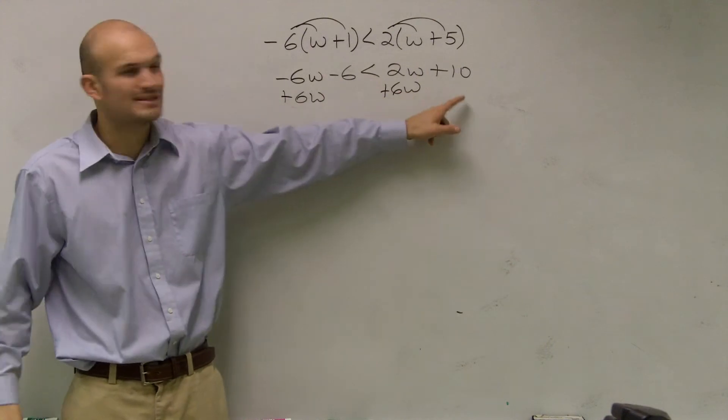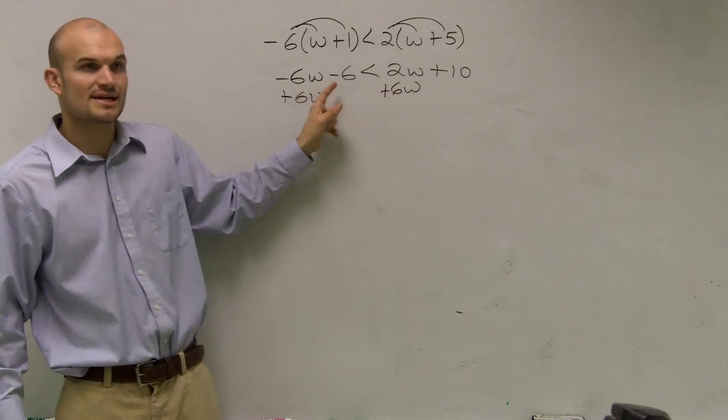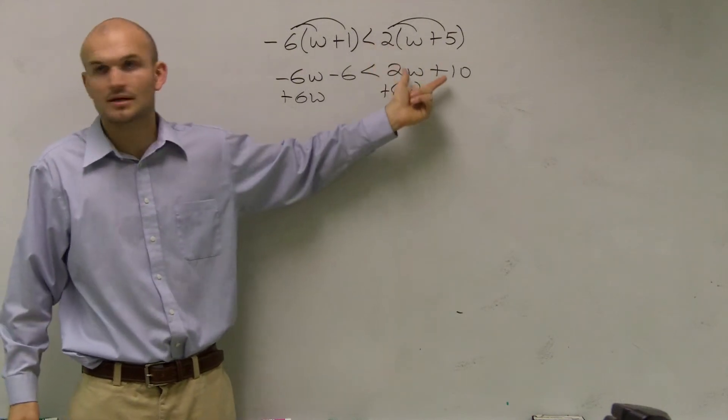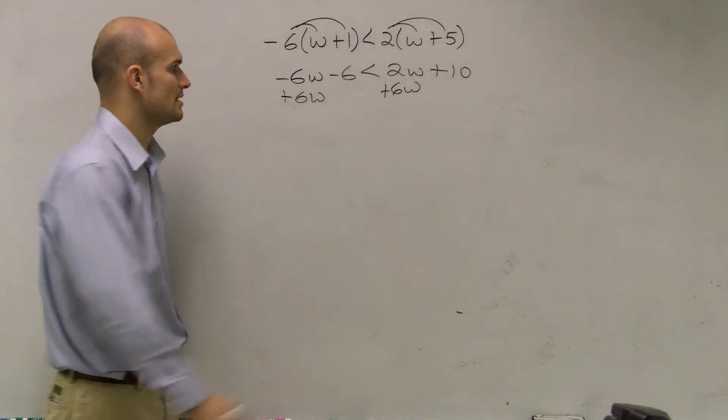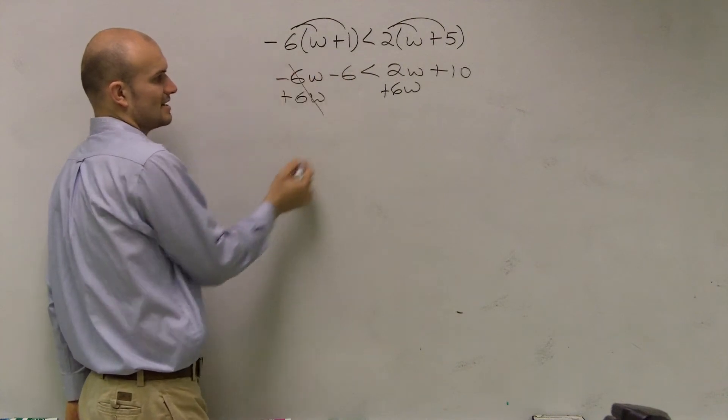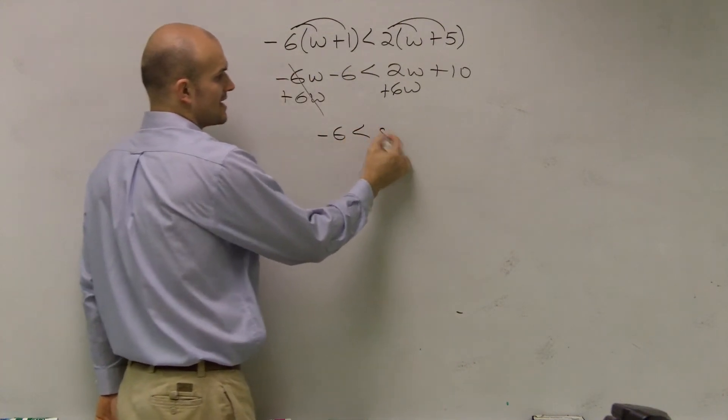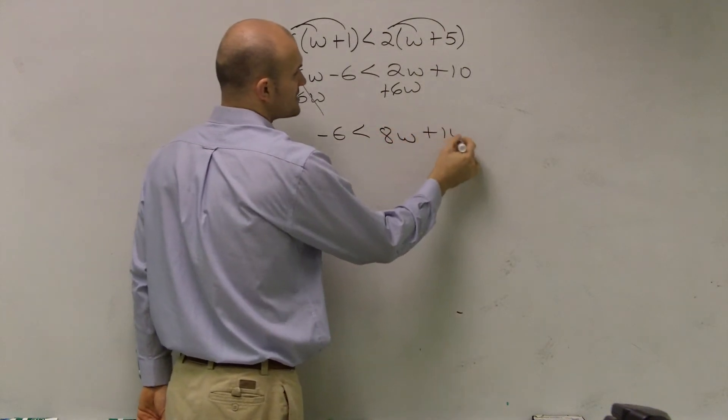A couple mistakes. Students want to add 6w to 10, or they want to add 6w to 6. Remember, it's both sides of your inequality. And remember, you can only add like terms. Since these are both w's, you can only add them together. So now this is going to cancel to 0. So I'm just left on this side. Negative 6 is less than 8w plus 10.